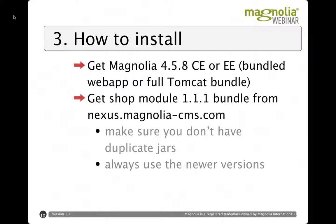When using the 1.1.1 version you might see an installer error complaining about a path it could not find in the config. That's because the shop module was first taken to Magnolia 4.5 on the Enterprise Edition and therefore has a small bug in the installer. You can work around it by creating that path with empty folders in your config. This bug is fixed in the upcoming 1.1.2 version.